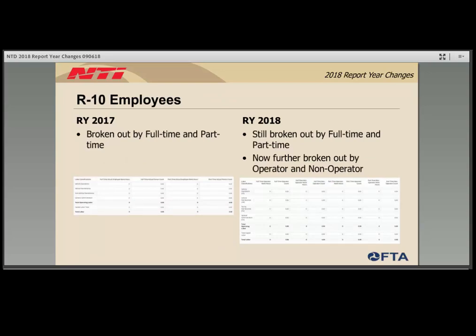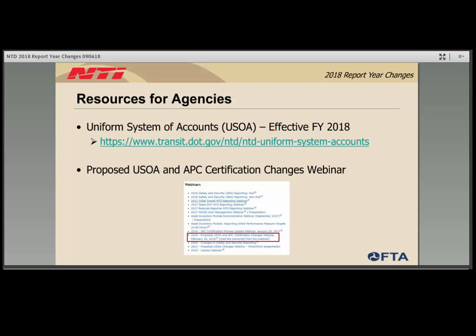The R10 resources form was updated as a result of the new USOA. Similar to previous years, the form is separated into full-time and part-time employees, but it is now further broken down into operators and non-operators to more closely mimic the F30 salaries, paid absences, and fringe benefits breakouts. Regarding resources, the published USOA can be found at the provided link. Each funding source and expense type in the USOA has a corresponding four-digit number found on the NTD forms. If you have questions about where to report something, look up the four-digit number in the USOA document for more detail. Additionally, FTA has posted a webinar on the NTD webpage discussing these changes in regard to the Federal Register notice.